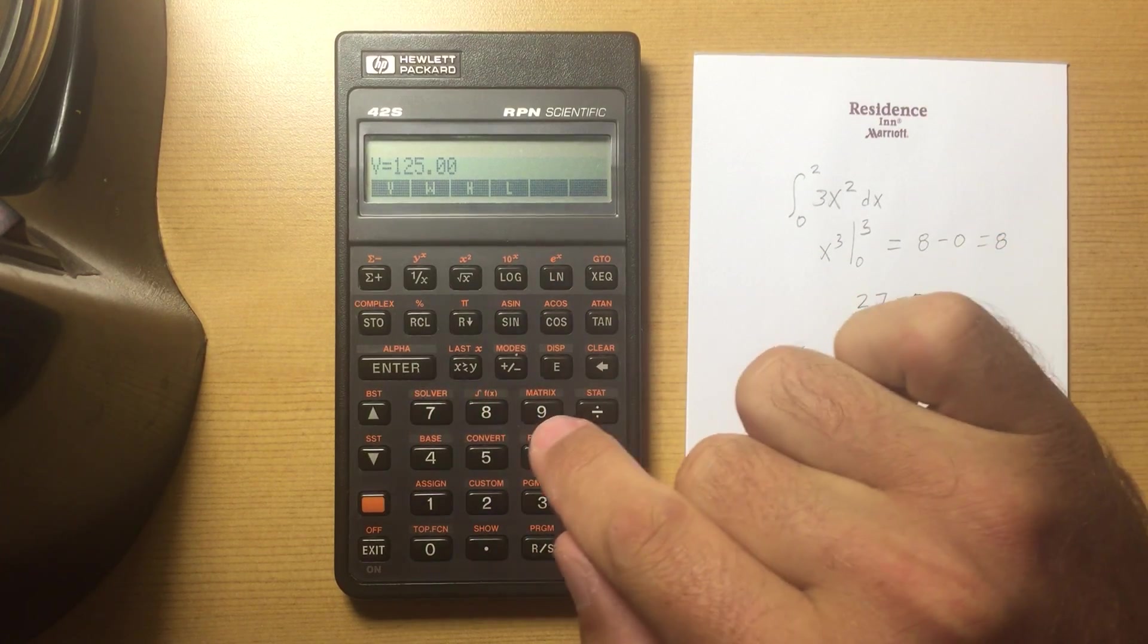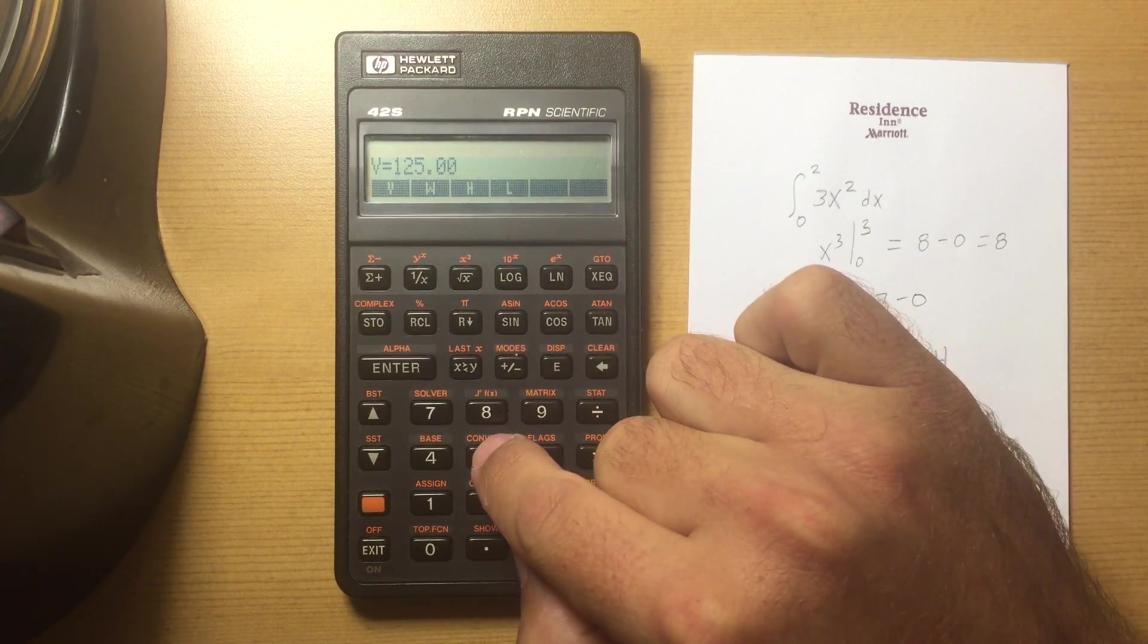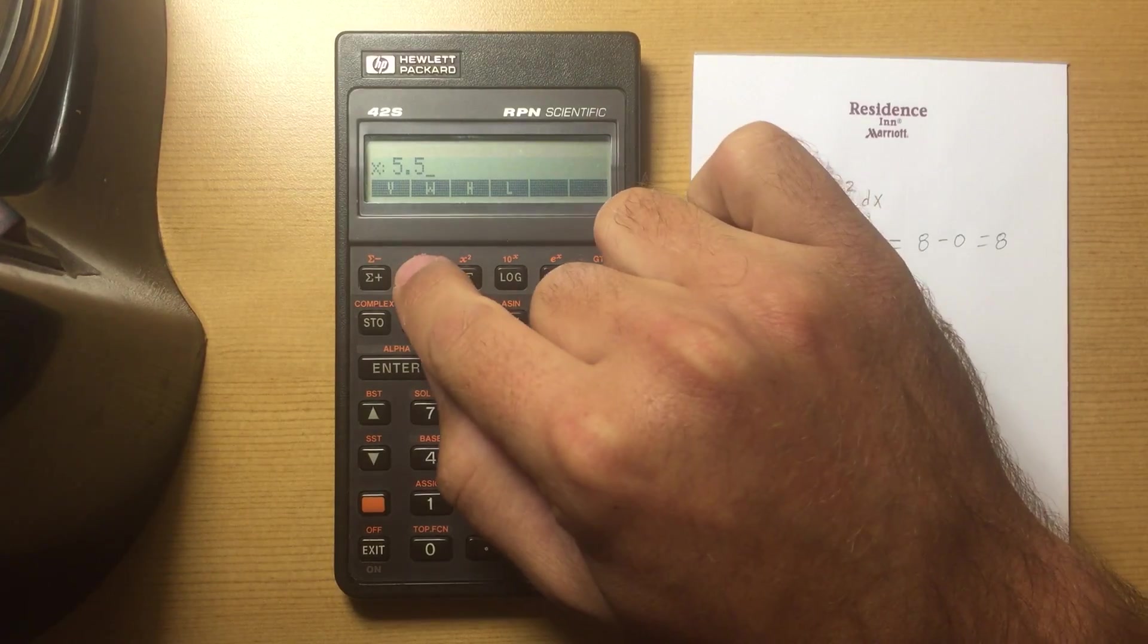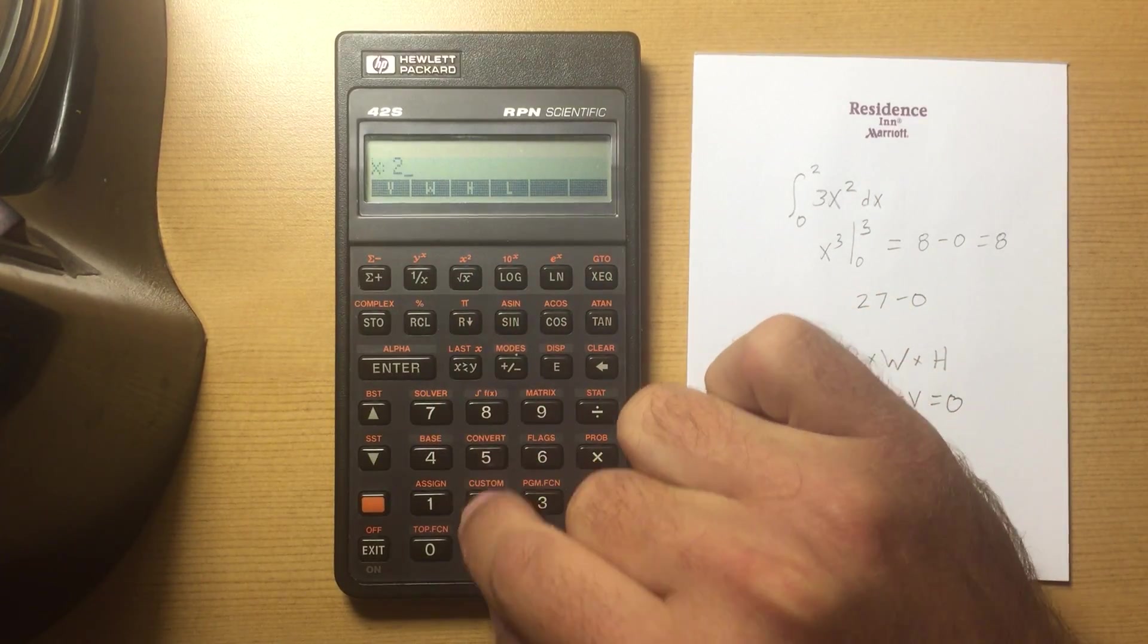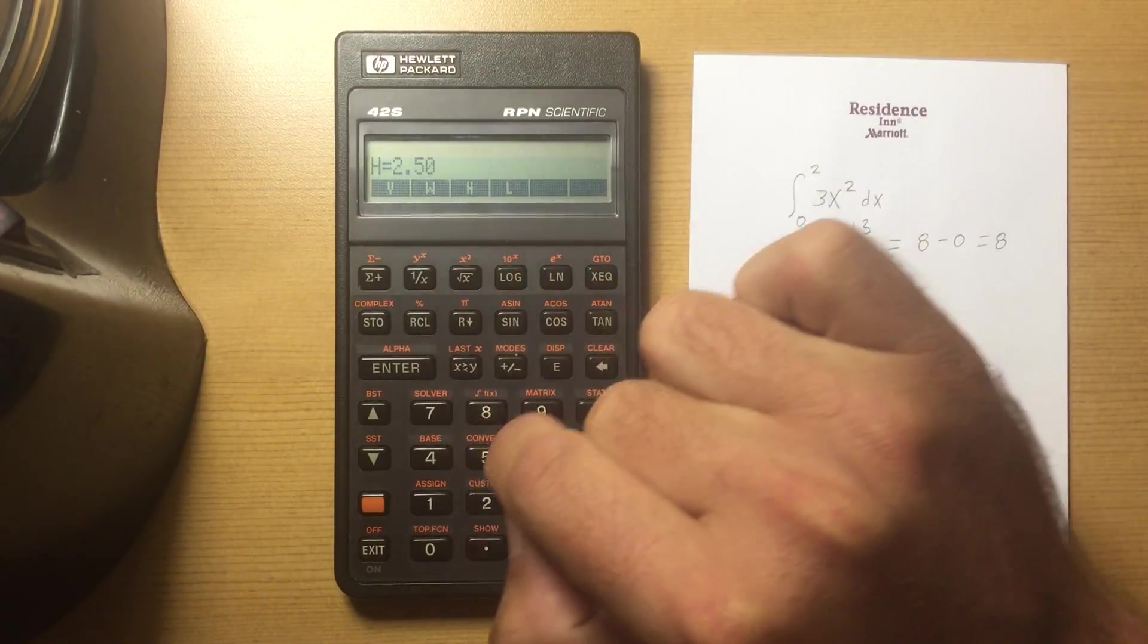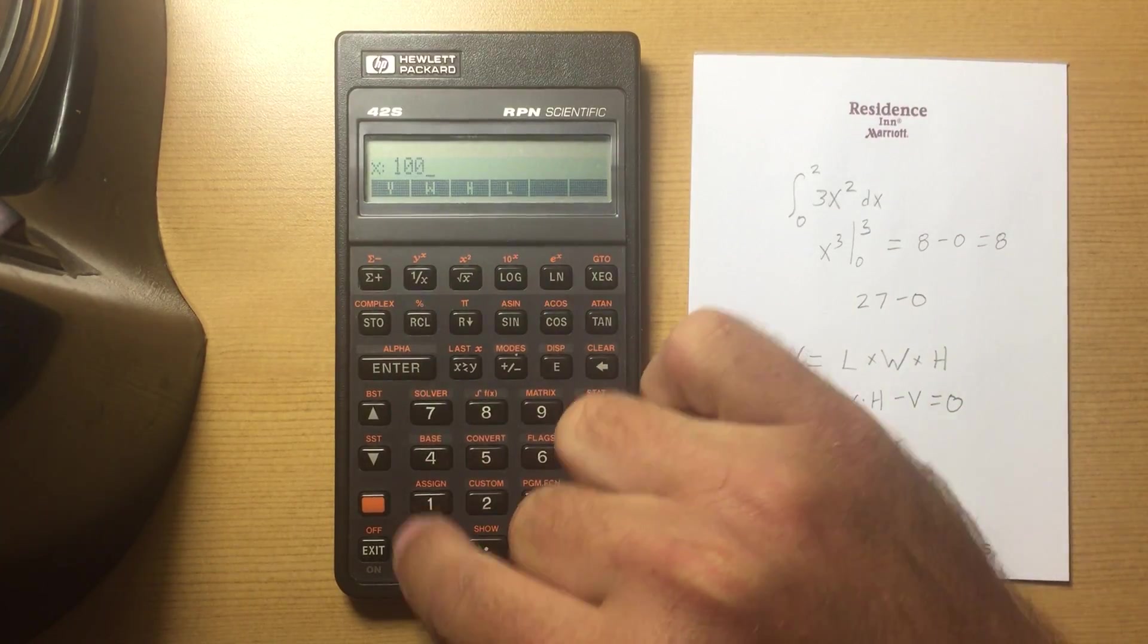Let's say I have a box that is 5.5 wide, 2.5 high, and my volume I want to be 100.